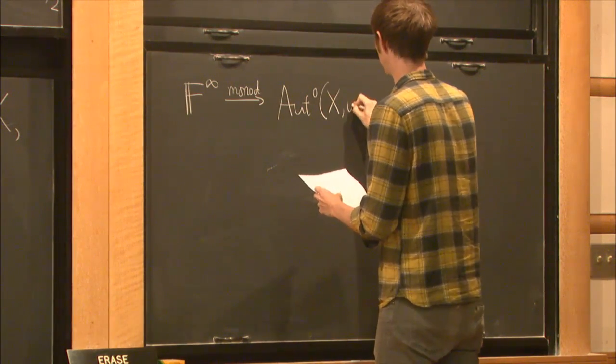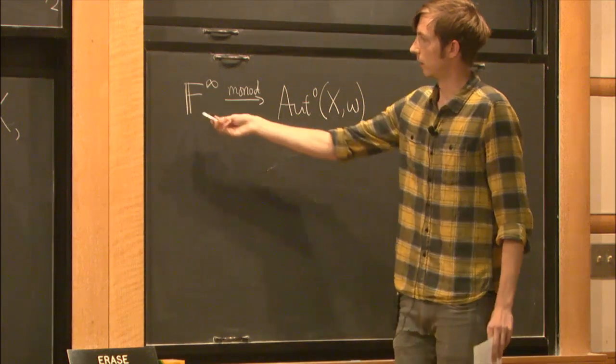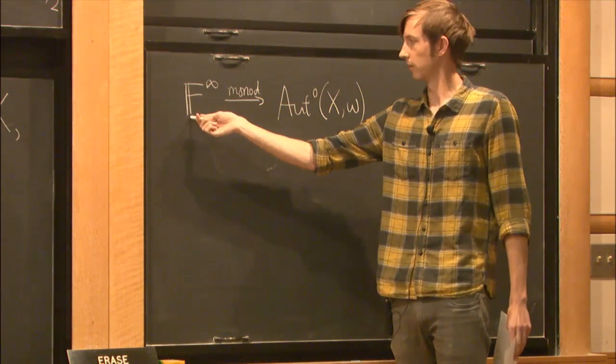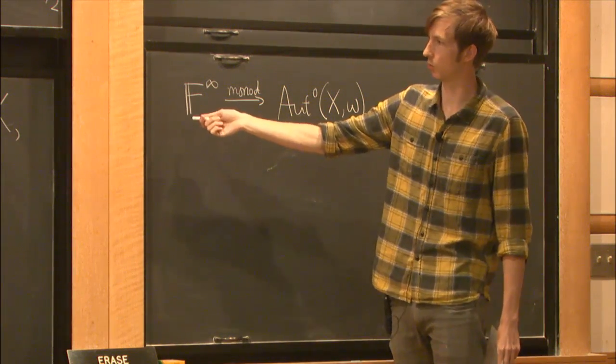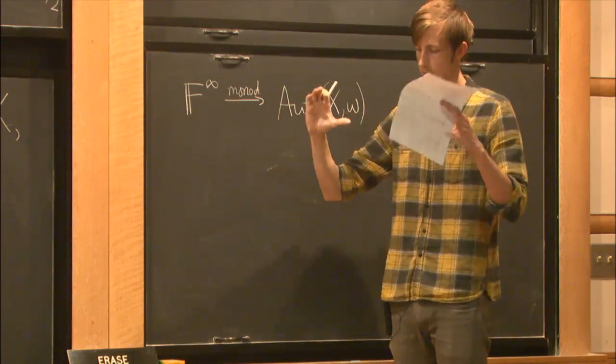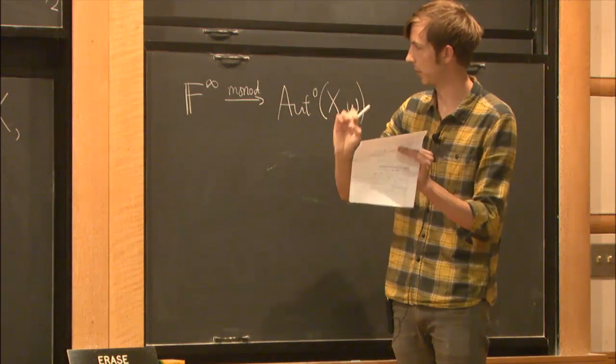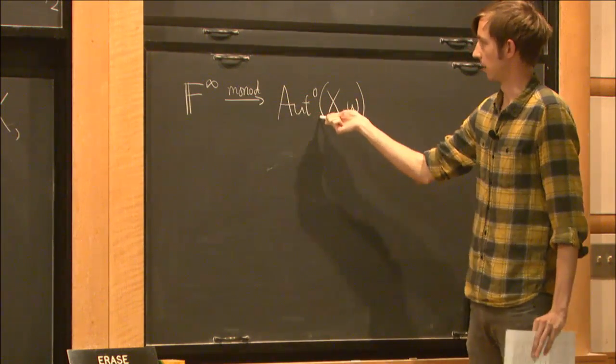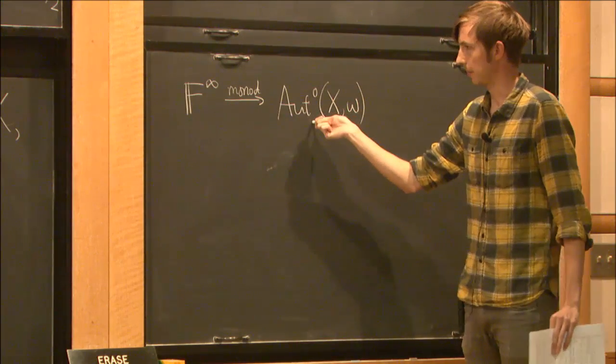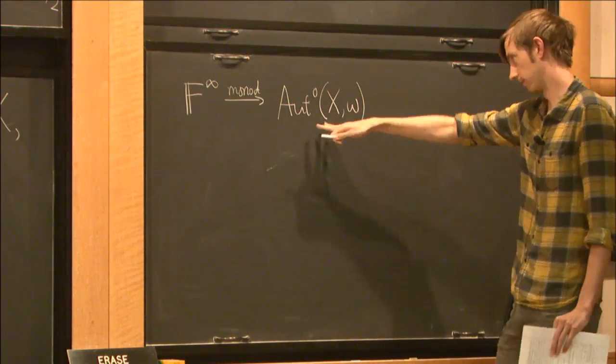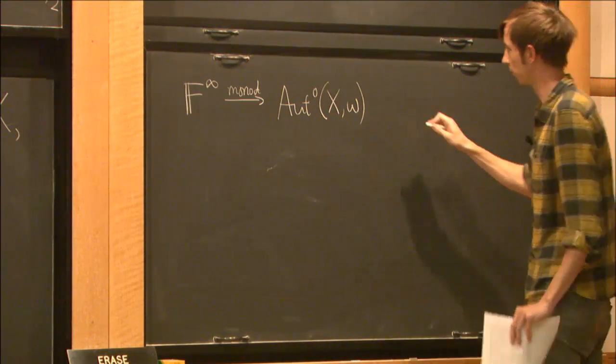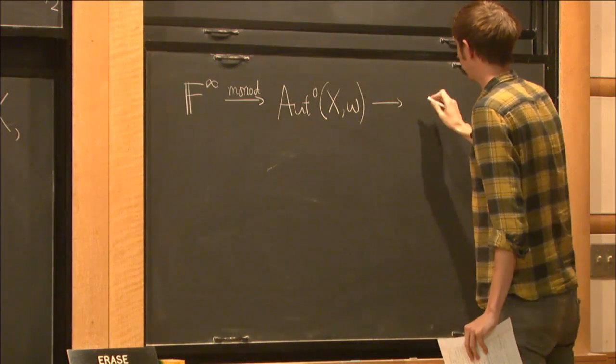And how does the proof look? Well, we realise this as the fundamental group of the upper half plane minus an infinite set of points. And we use a monodromy construction to get this map into the symplectic Torelli group. And then we look at...